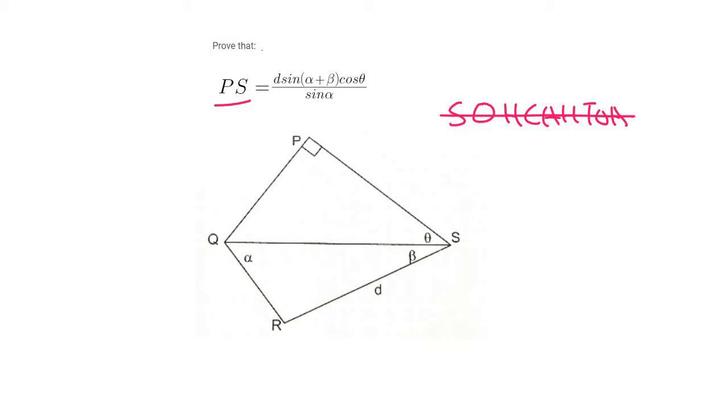Step two, try the sin rule. So the sin rule is all about opposites. So we would like QS. So we could say QS over this angle. Now we could go work that angle out very easily because we know that the angles in a triangle must add up to 180.